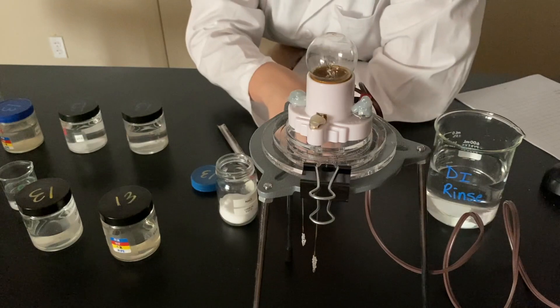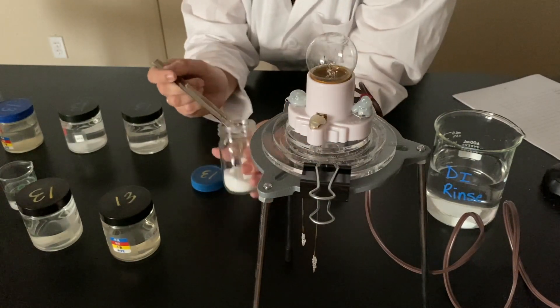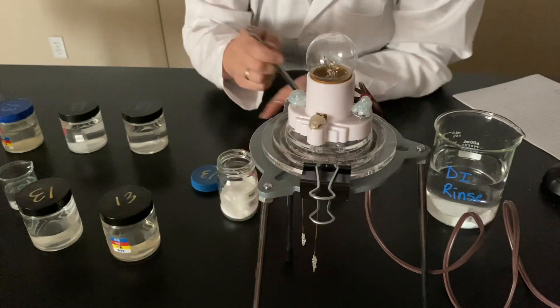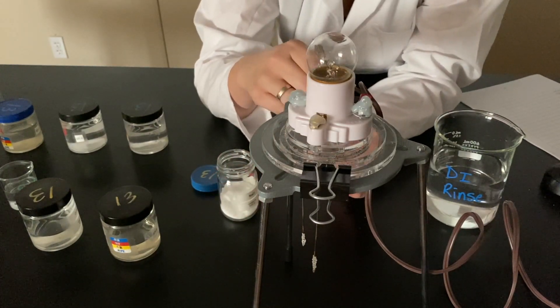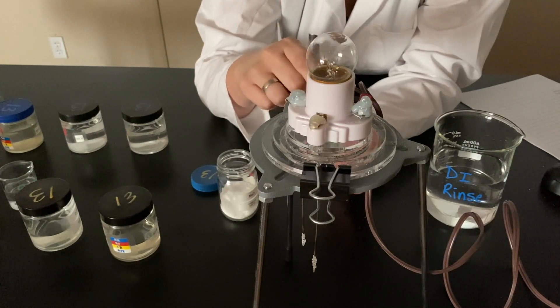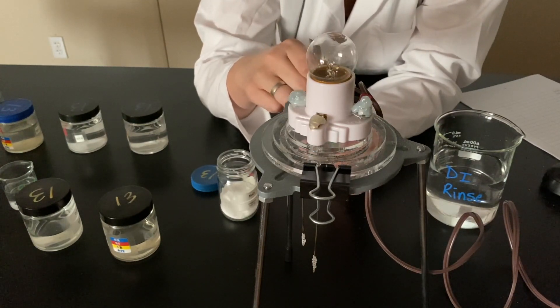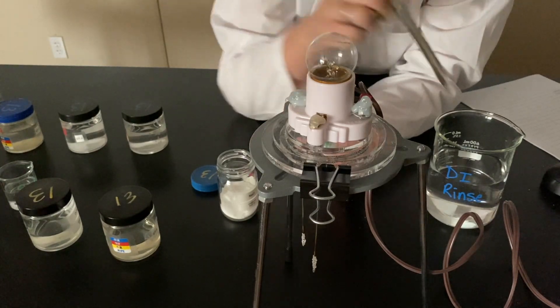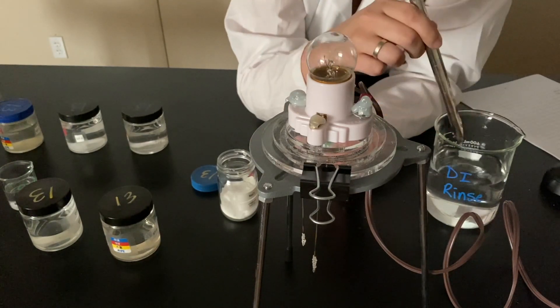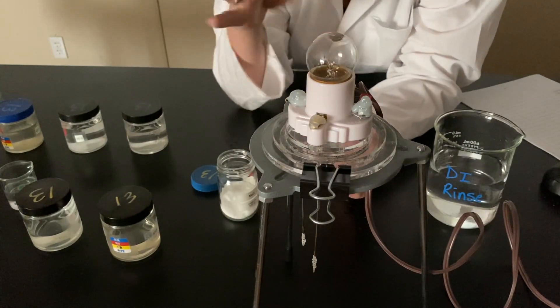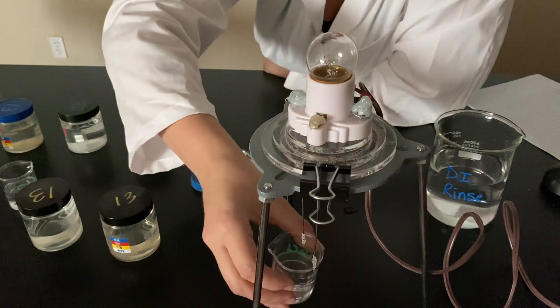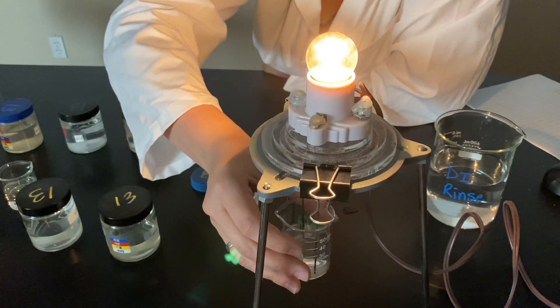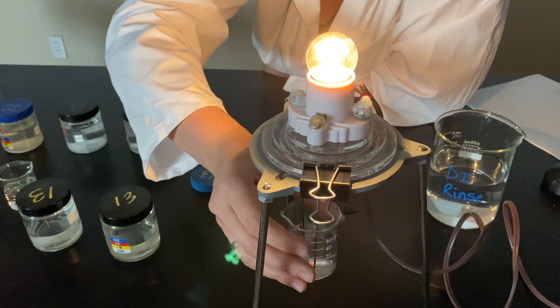Then we have table salt, NaCl, sodium chloride, aqueous. So, we pour some NaCl and some DI water. You have to make sure you use DI water to make your solution. Otherwise, if you use just tap water, you might get your data contaminated. All right. So, salt water. NaCl as an aqueous solution.